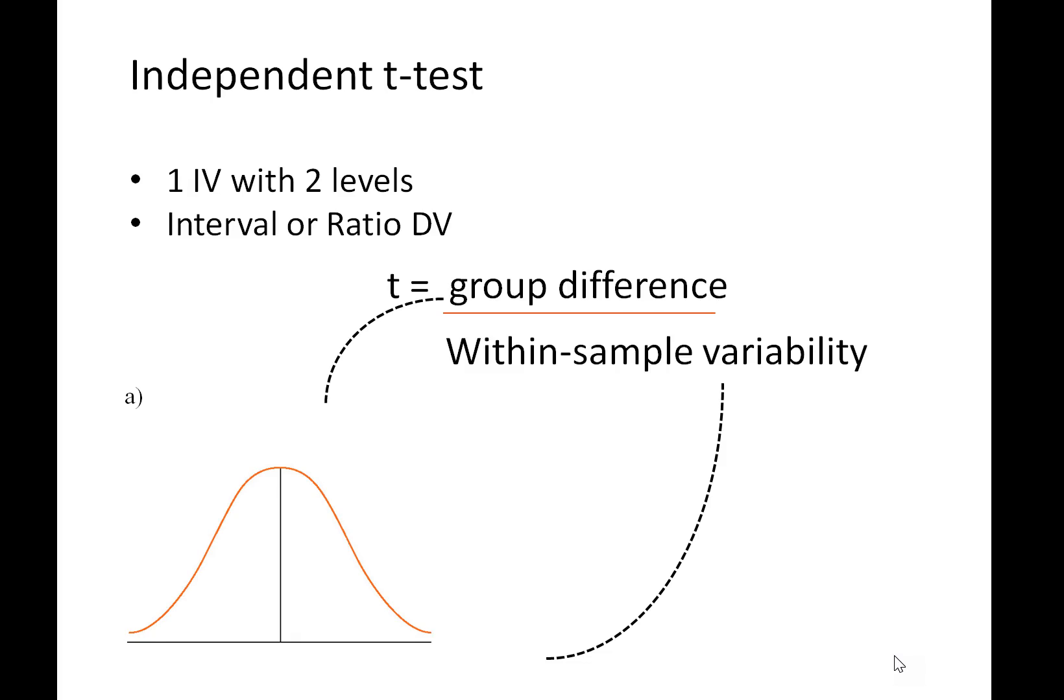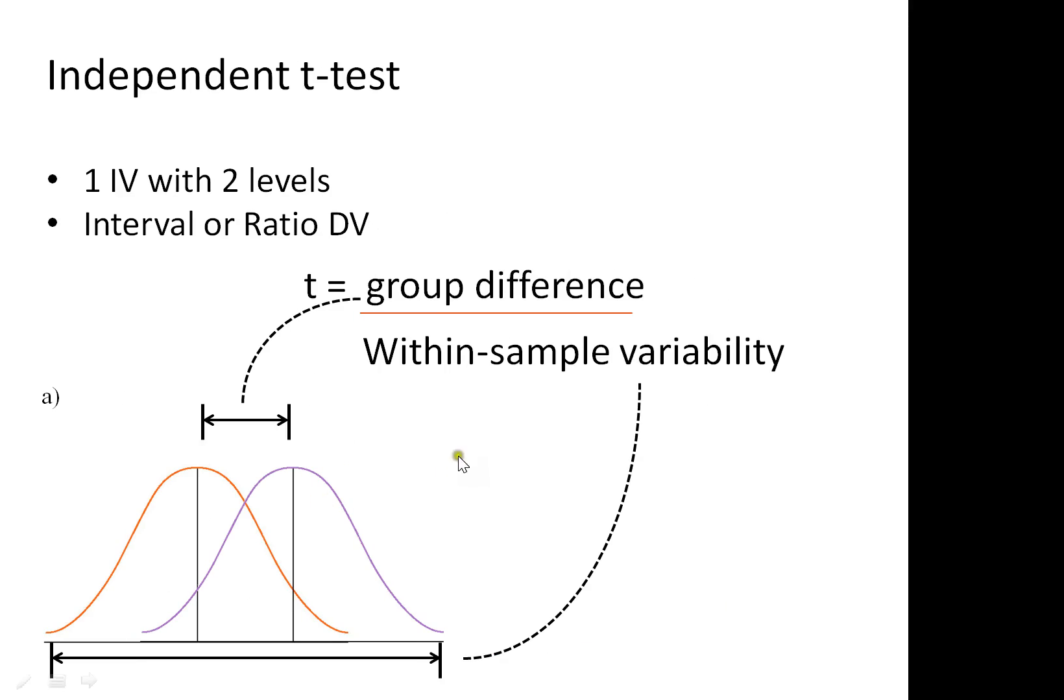Before I show you the equation for the t-test, essentially what it boils down to is a ratio of the difference between two groups against the within-sample variability. So here we have two distributions. The black line down the centre indicates the mean point. We have a difference between the means, and at the bottom we have a measure of the sample variability.